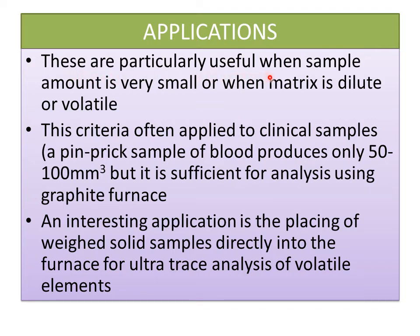Electrothermal atomizers are particularly useful when the sample amount is very small or when the matrix is dilute or volatile. This applies especially to clinical samples — a pinprick blood sample of only 50 to 100 cubic millimeters is sufficient for complete analysis using a graphite furnace. Another interesting application is placing small solid samples directly into the furnace for ultra-trace analysis of volatile elements.